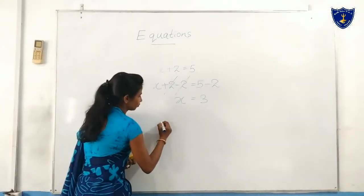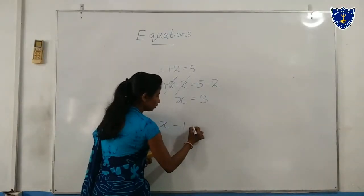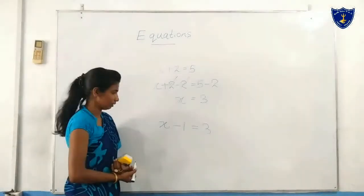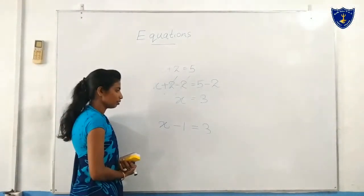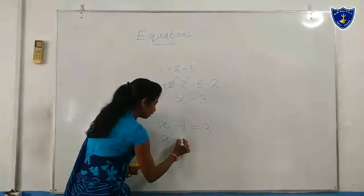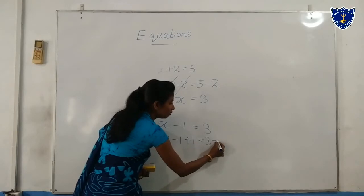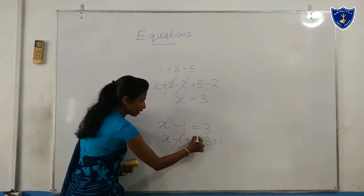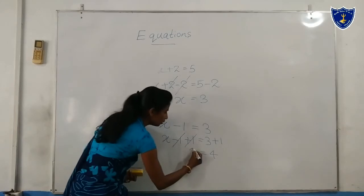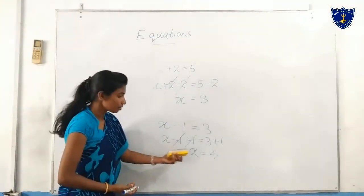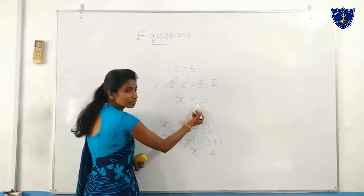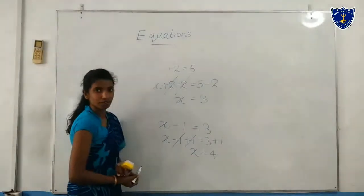Look at here: x minus 1 equals 3. Here we can see minus 1 — we want to remove that term. When we add 1 to both sides, we can remove that minus 1. x minus 1 plus 1 equals 3 plus 1. Here the 1 cancels out, and 3 plus 1 gives 4. So x equals 4. That is our answer — the solution of this equation. The solution of the first equation was x equals 3, and here x equals 4.